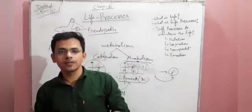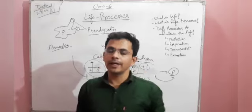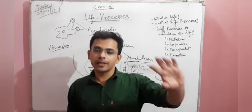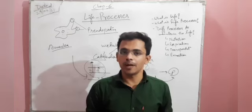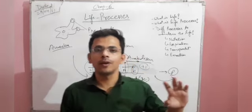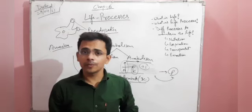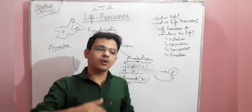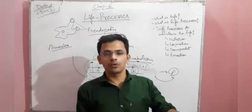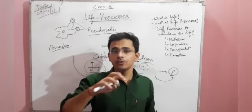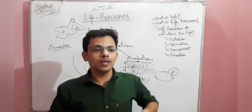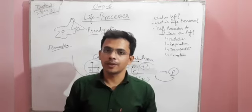There are two types of nutrition: autotrophic and heterotrophic. Autotrophic organisms make their own food — plants are the example, making food with the help of sunlight and chlorophyll. Heterotrophic organisms depend on autotrophs — all animals are heterotrophs that directly or indirectly depend on plants. That is why plants are called producers and we are called consumers.